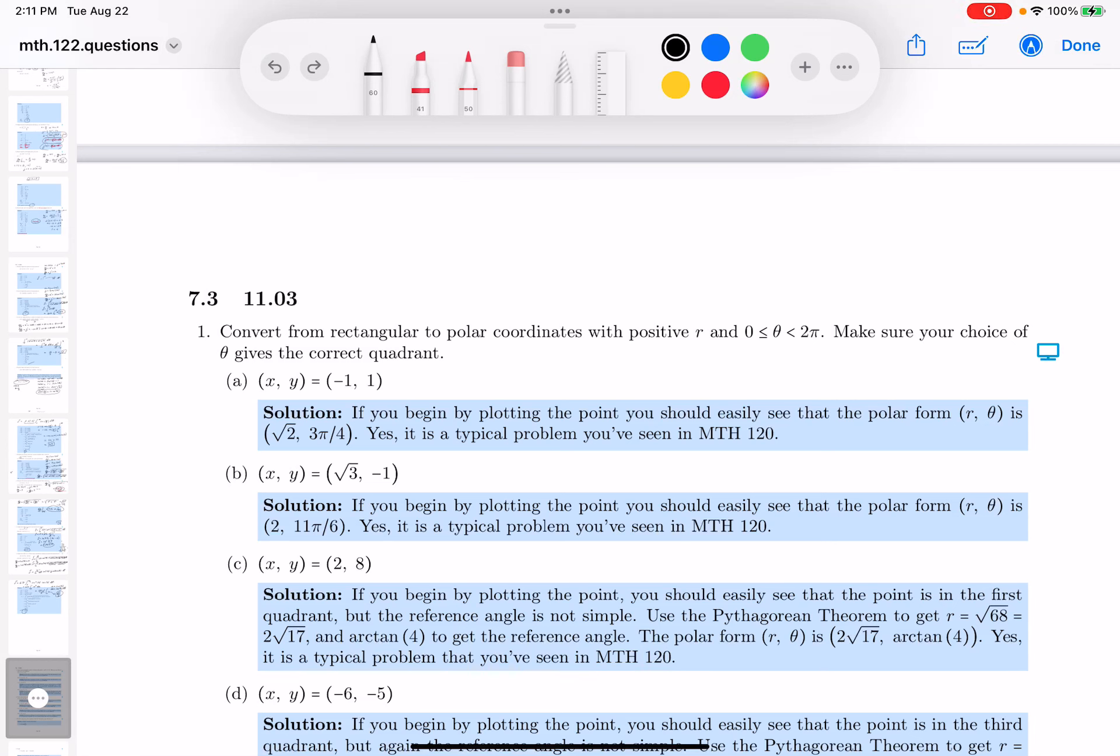Okay, so 1a, let's draw a picture first, and you don't really need to draw a picture, but I'm saying in your mind's eye, you should see that there's a coordinate here for a, and it's minus 1, that means the x is minus 1, and the y is 1.